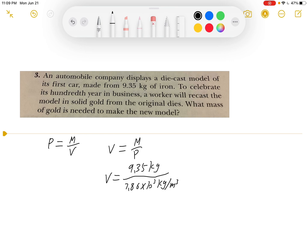So after the calculation, we will have the volume is 1.19 times 10 to the negative 3rd power cubic meter.